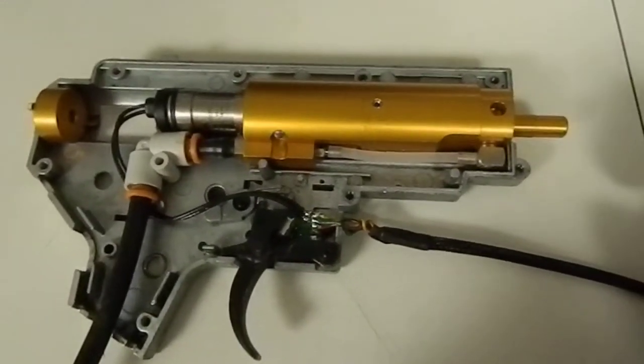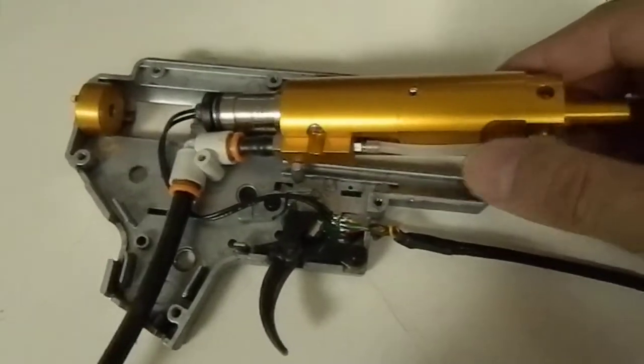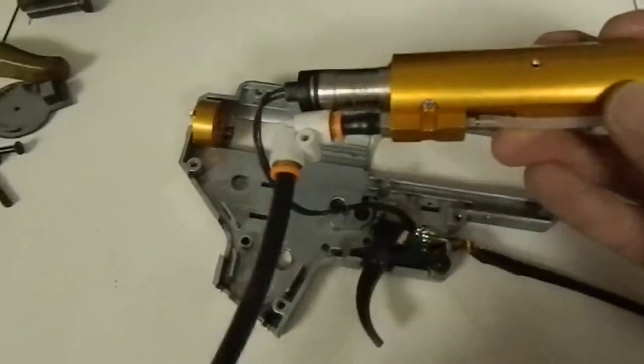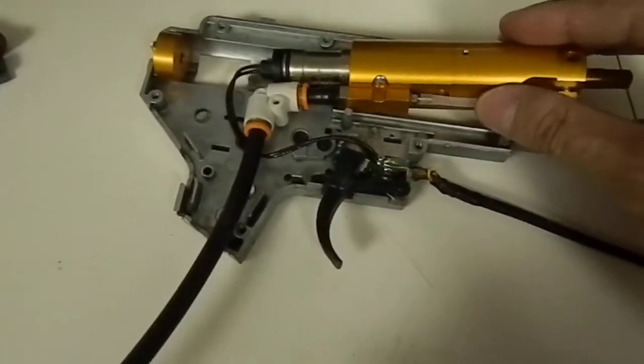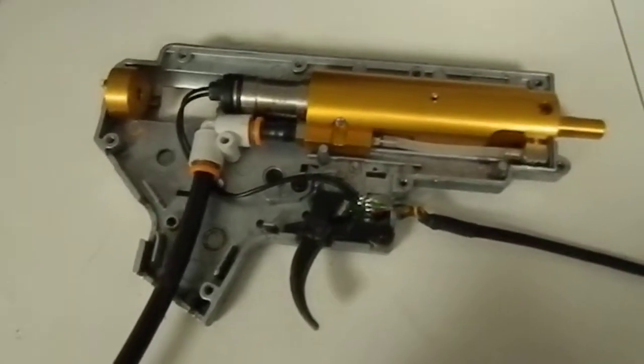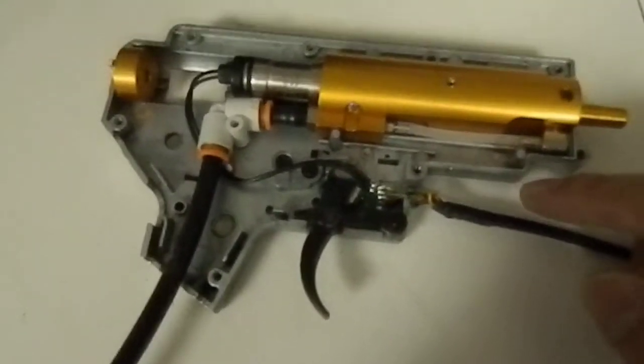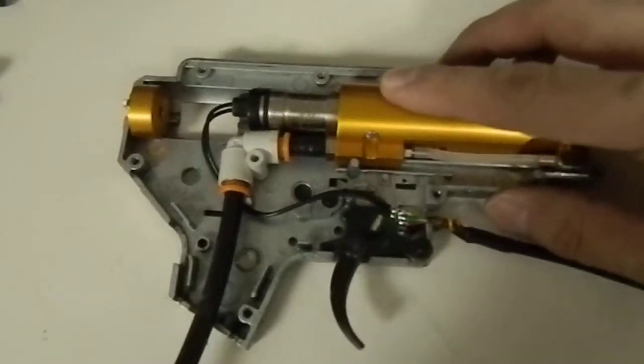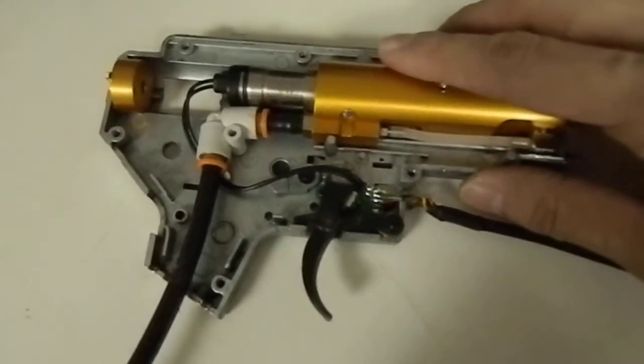This is a totally drop-in system. Very simple, easy mechanism. Runs off of high-pressure air. Just drops right into your standard version 2 gearbox. This is a Tokyo Marui M4 gearbox, but it'll fit into most version 2 gearboxes.